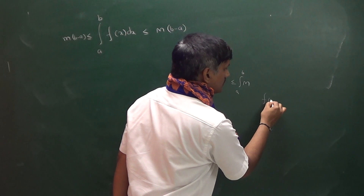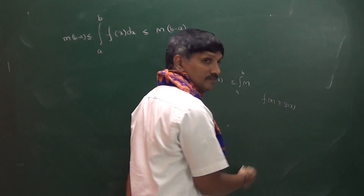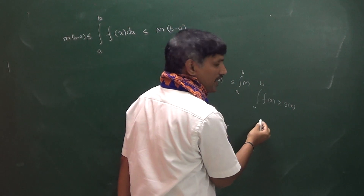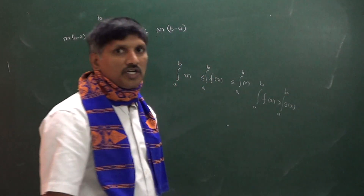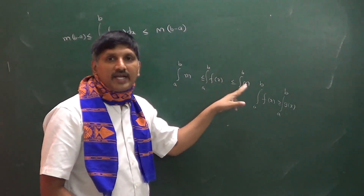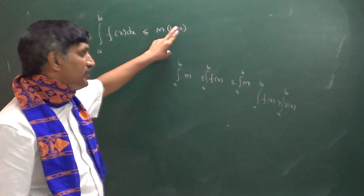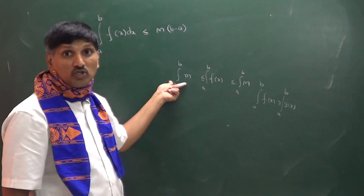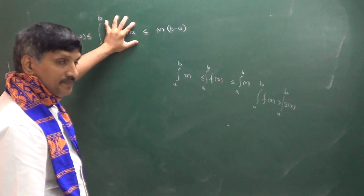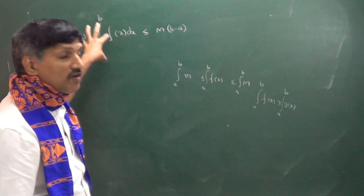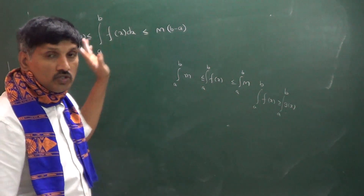Whenever f(x) ≥ g(x) on the interval [a, b], then the integral from a to b of f(x) dx is also ≥ the integral from a to b of g(x) dx. Since m is a constant, integrating it gives m·(b − a). The same reasoning applies on the other side with M. So whenever the function's maximum is M and minimum is m, the integral value lies between m·(b − a) and M·(b − a).